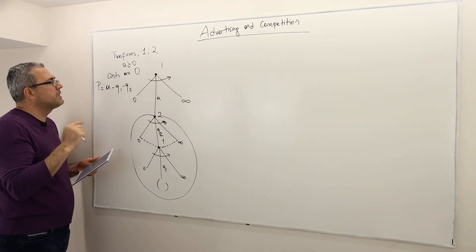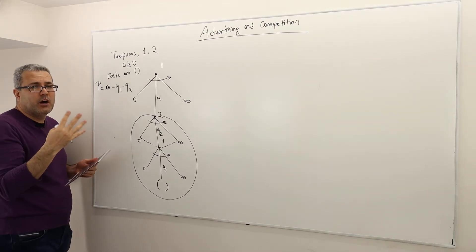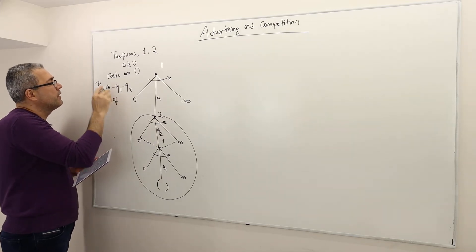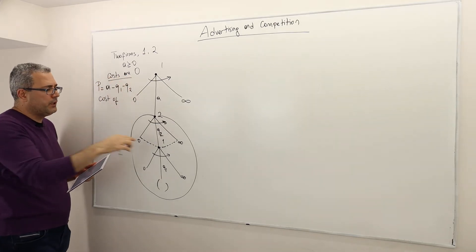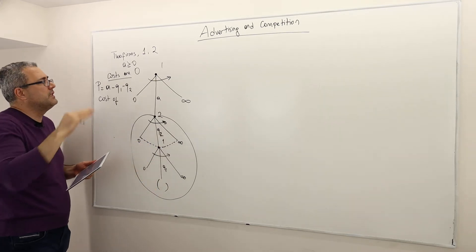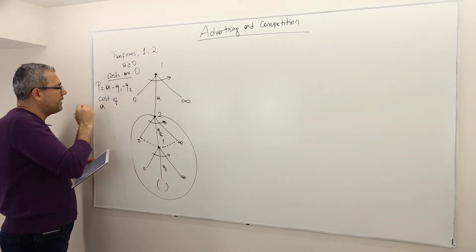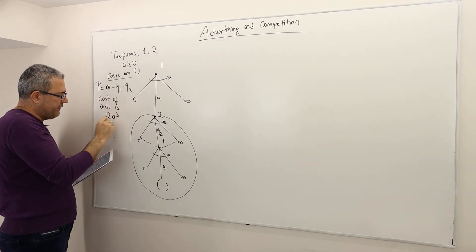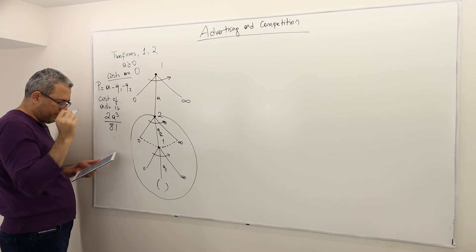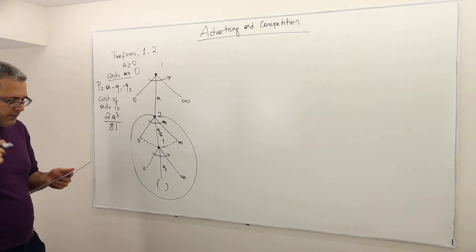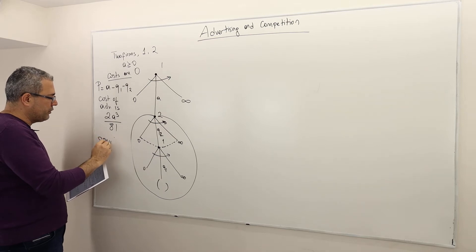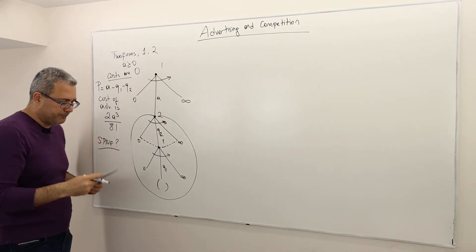Advertisement is not free — it has a cost. The cost of producing Q1 and Q2 output is zero, but the cost of advertising is 2A³ divided by 81. So the question is: what is the subgame perfect Nash equilibrium outcome of this game?